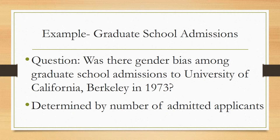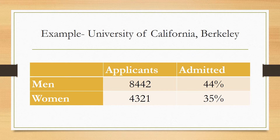This next example involves graduate school admissions. The main question is: was there a gender bias among graduate school admissions to the University of California, Berkeley in 1973? We will determine this by the number of admitted applicants. Looking at the data, of the men who applied, 44% were admitted, while of the women who applied, only 35% were admitted. So it might look like they're admitting more men than women — but we need to look into the data a little further.